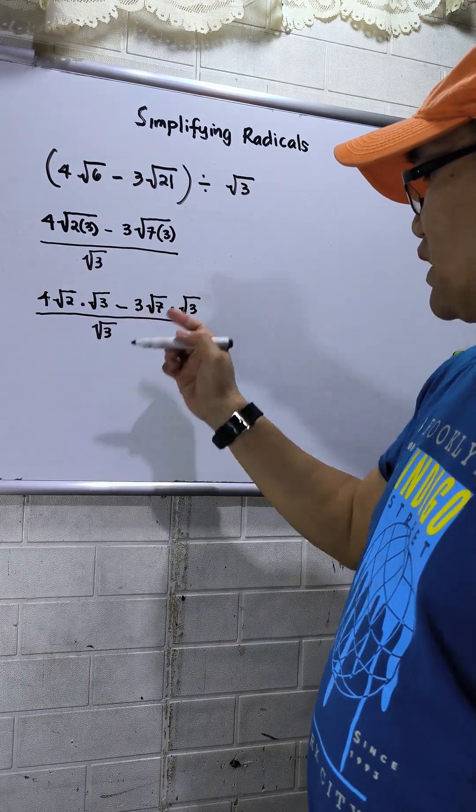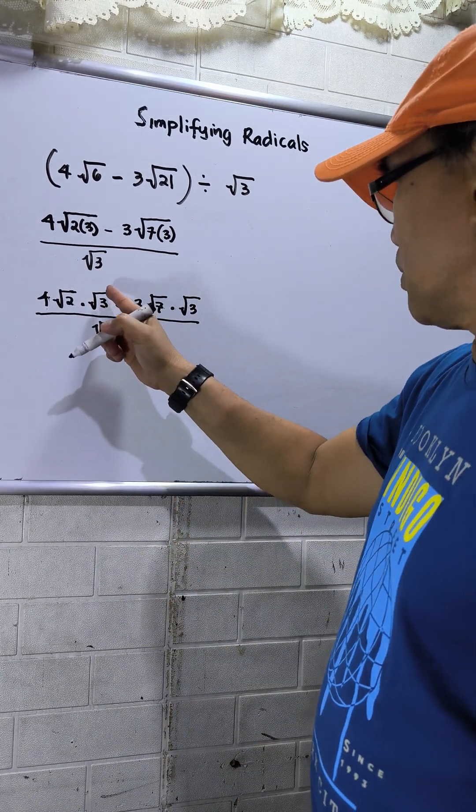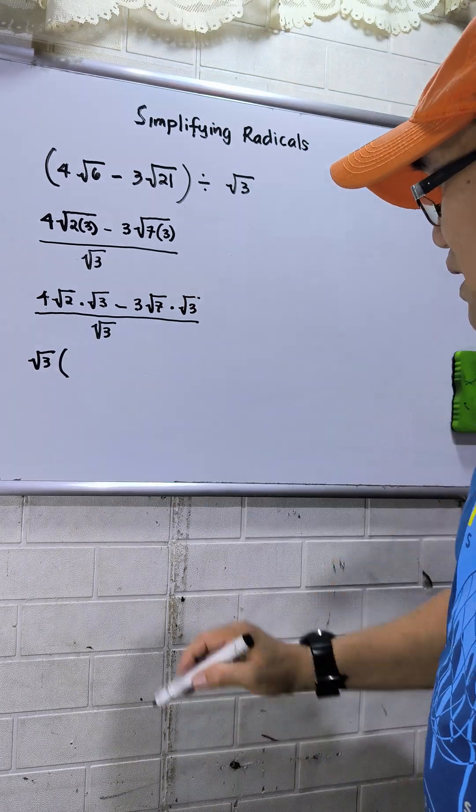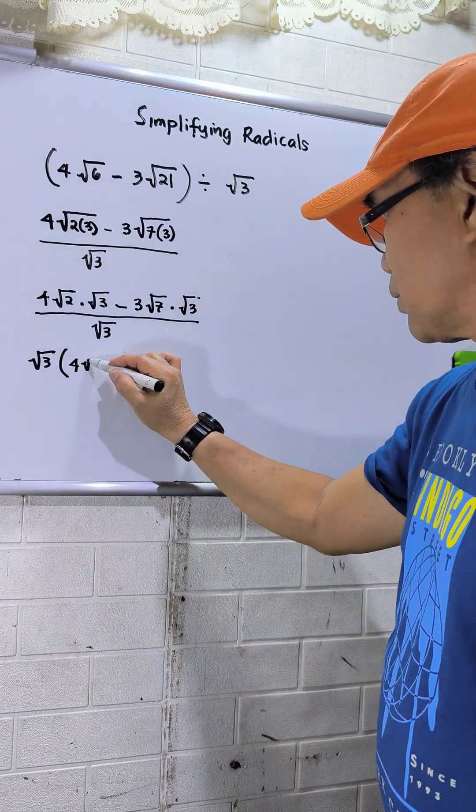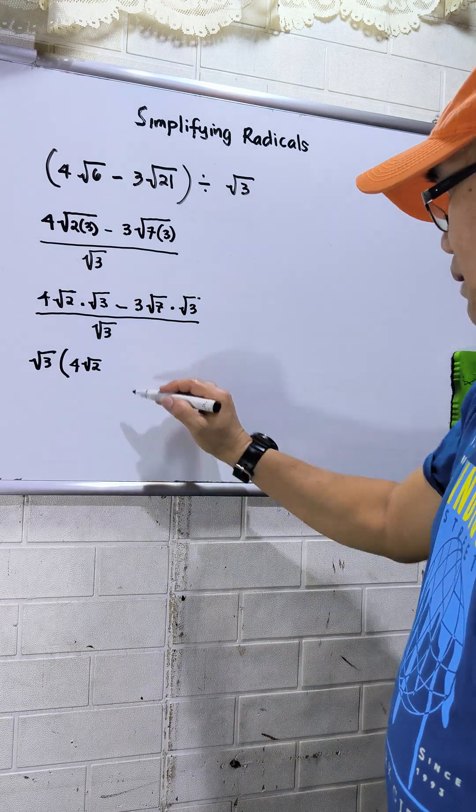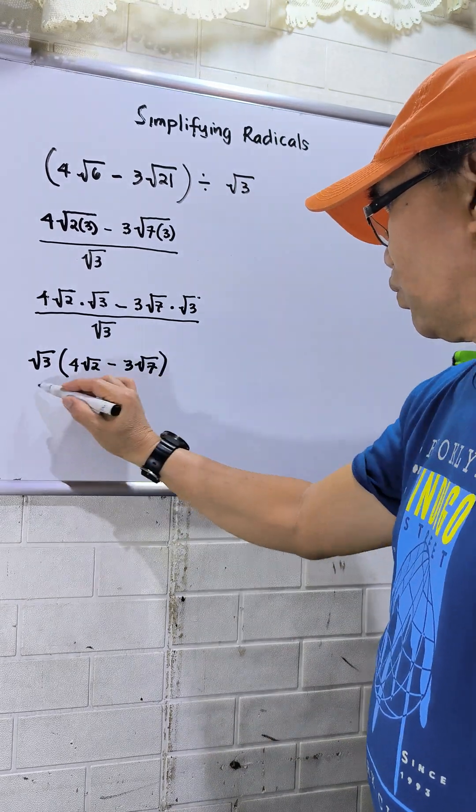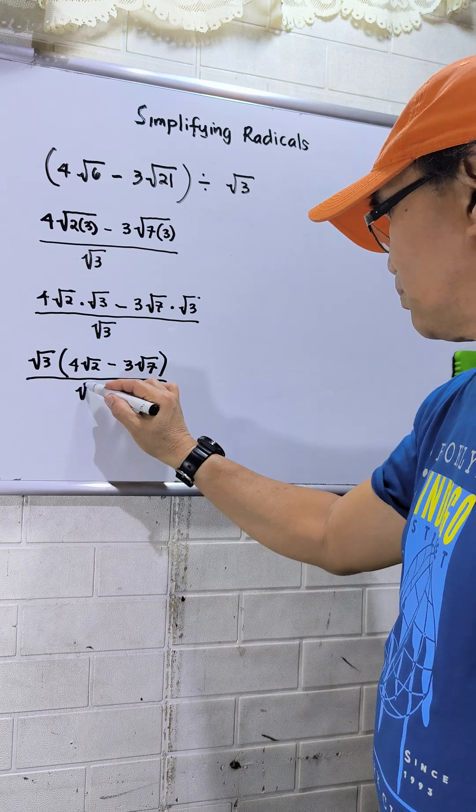Factor the numerator. There is a common square root of 3. So this will be square root of 3 in circle brackets: 4 square root of 2 minus 3 square root of 7, over square root of 3.